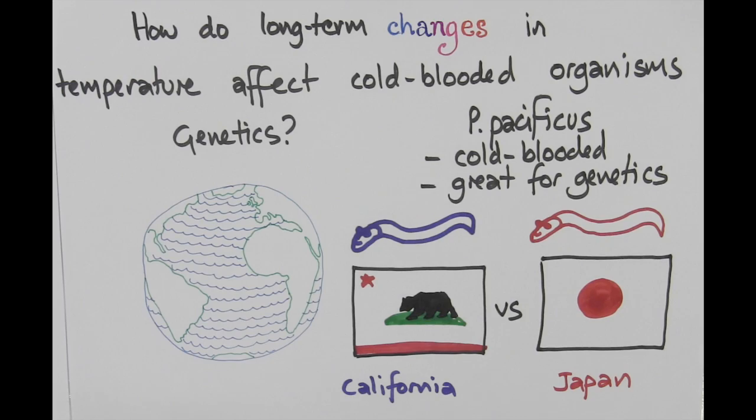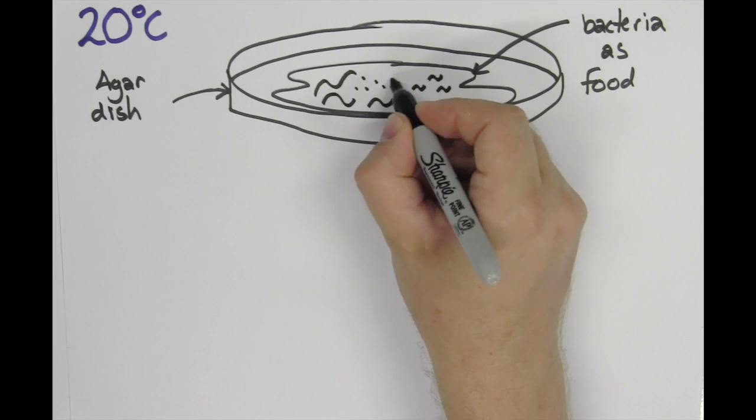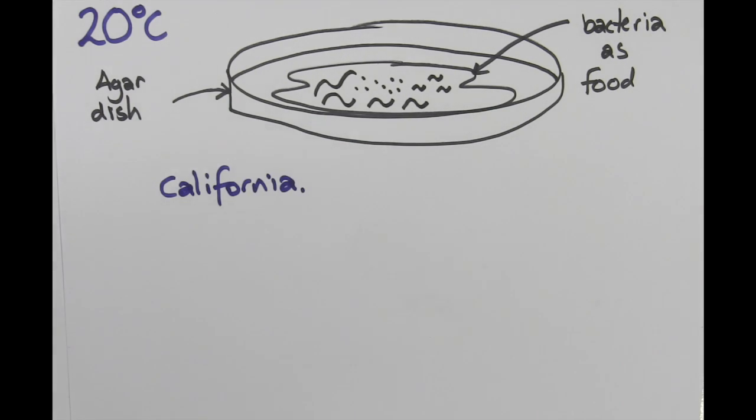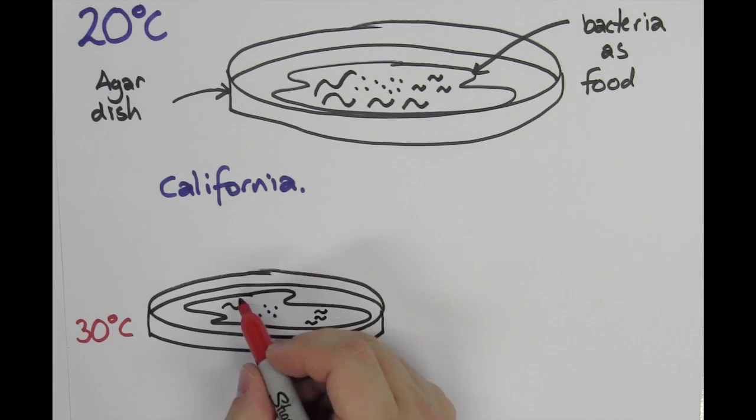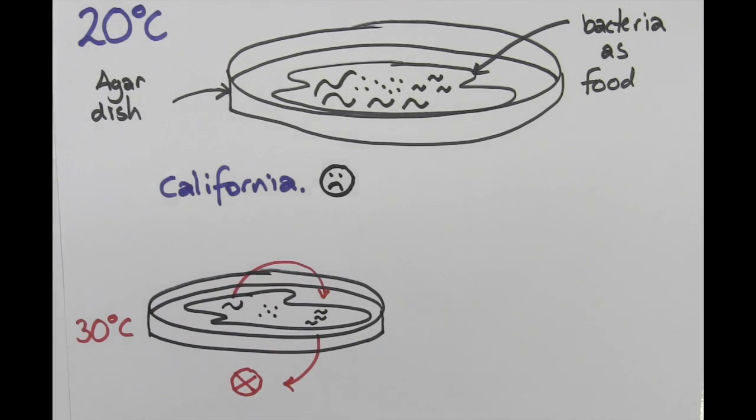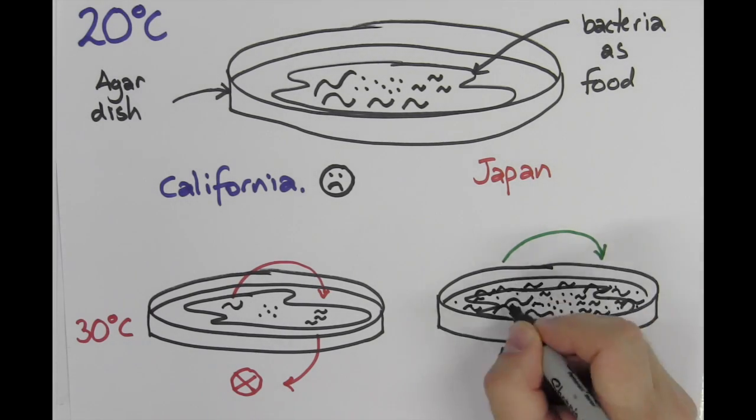When we grow these strains in the lab at a normal temperature, the worms go through their life cycle. However, if we grow the California strain at 30 degrees, the next generation is infertile. But at the same temperature, the Japanese strain remains fertile indefinitely.